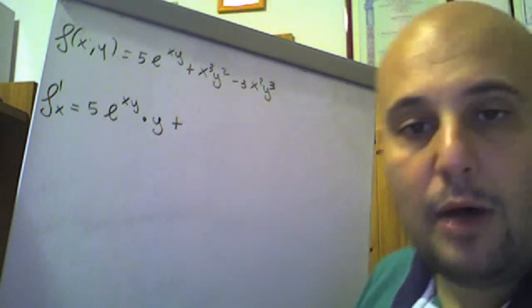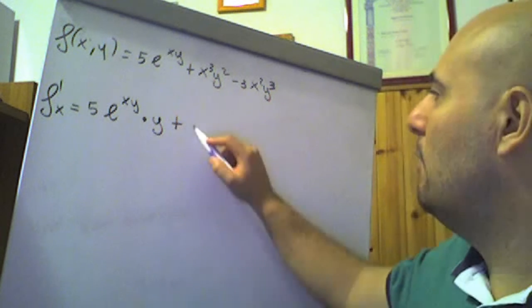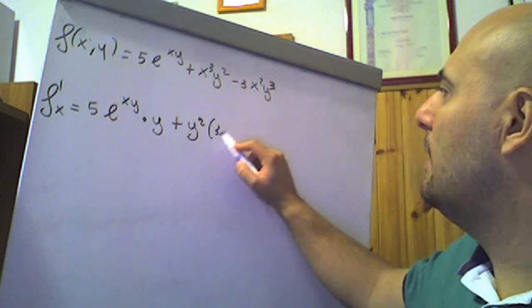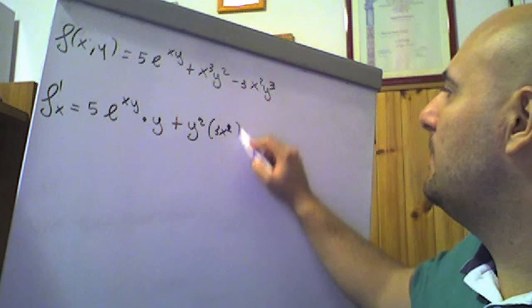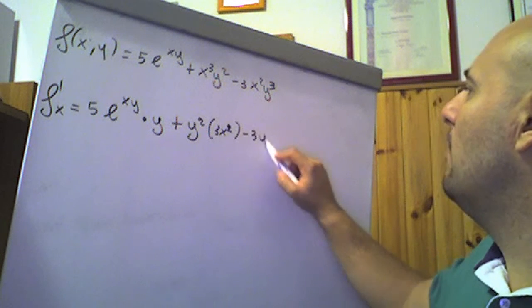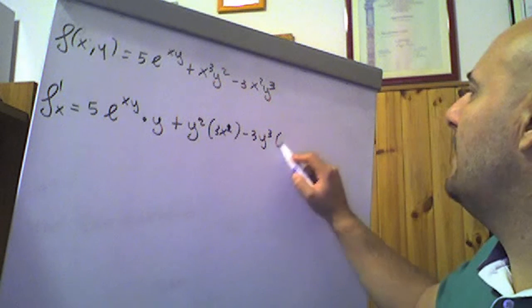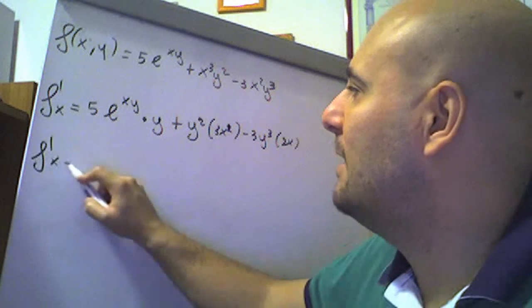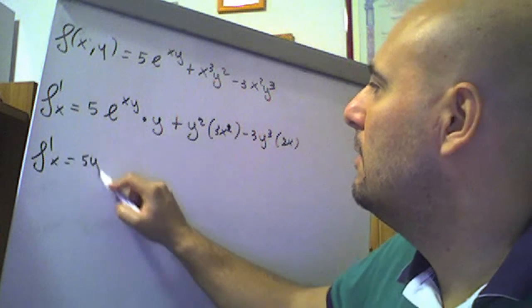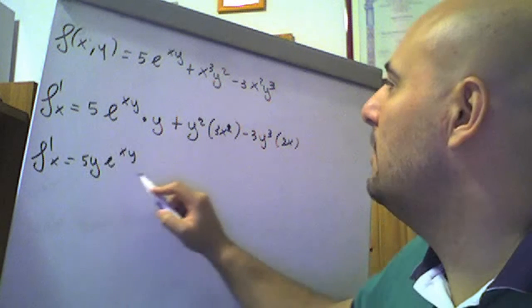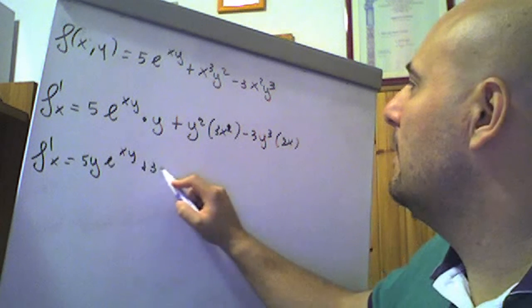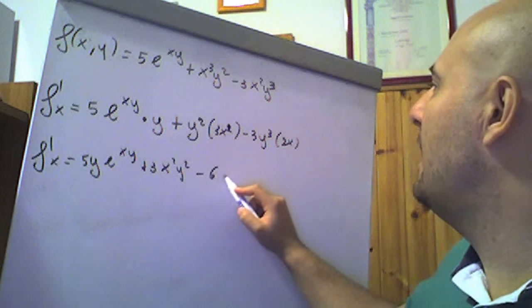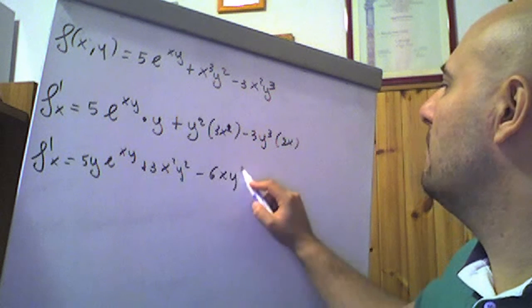Più x cubo y quadro: y quadro è una costante rispetto alla x, sta fuori, derivata di x cubo è 3x al quadrato. Meno 3y cubo è un numero rispetto alla x, derivata di x quadro è 2x. Pertanto abbiamo trovato che la derivata parziale prima della f fatta rispetto alla x sarà 5y·e^(xy) più 3x²y² meno 6xy³.